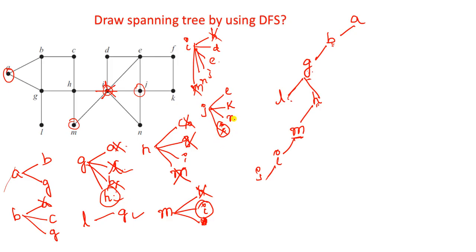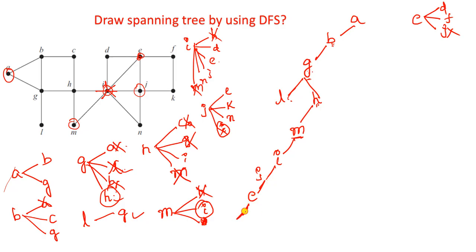The new vertex is E. Explore E - E has incident vertices D, F, and J. J is already completed. F and D are not completed. I take D. Explore D - D has only two incidents: E and I. Both E and I are already visited, so stop here and backtrack to E. At E, J is visited and D is visited. The remaining element is F. Insert F.